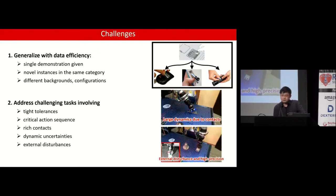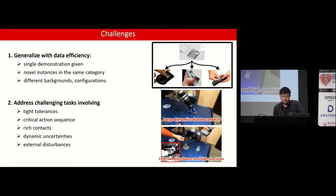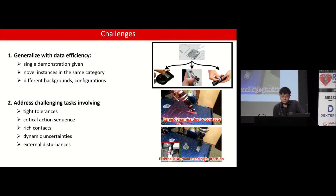When only one demonstration is given, we need to generalize to various instances, backgrounds, and configurations. We also consider multiple challenging tasks in this work. For example, for the battery assembly, there could be large dynamics due to the rich contacts and dynamic uncertainties. For the gear insertion, it requires high precision. For the battery assembly, a critical sequential action is required to put the battery beside the spring.